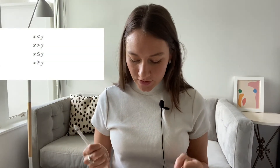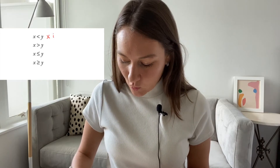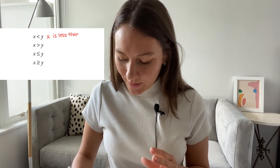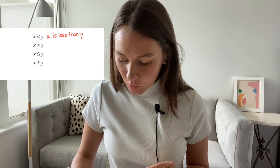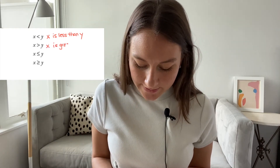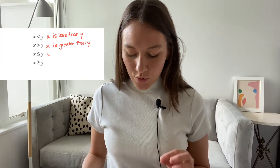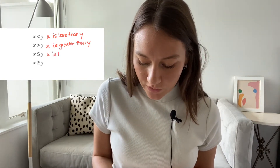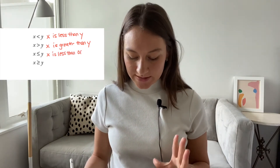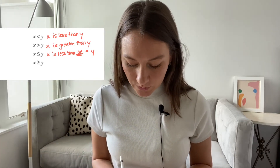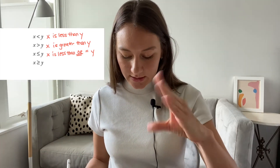So let's walk through when you have variables and it's a little bit less tangible. The first one is X is less than Y — you have Y being eaten by the Pac-Man. The second one is reversed: X is greater than Y, Pac-Man's eating X. When you have a less than sign with a line under it, it's less than or equal to, which basically means the number could be equal to that number or less. So X is less than or equal to Y means X could be Y or any number less than Y.